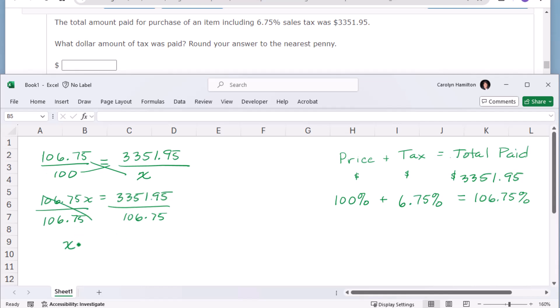And X will equal, let me just figure it out, $3351.95, $100, and divide it by 106.75. The original, that's X, which was the base. Okay, so that means that my selling price was $3140.